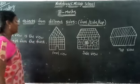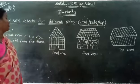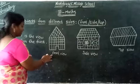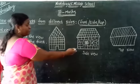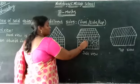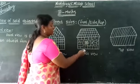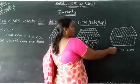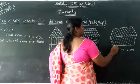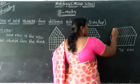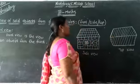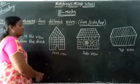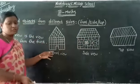Front view means the view of an object from the front. This is side view — view of an object from the side. Top view — view of an object from the top. One house only will look like three different views from three different sides.